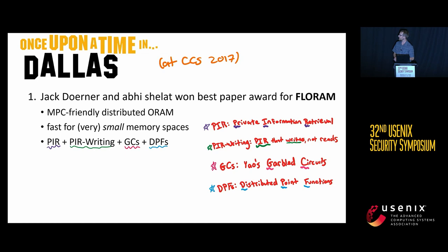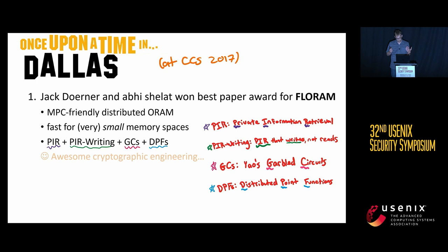Going back to CCS 2017: this was the FlowRAM construction. It was really nice — it won a best paper award, very high quality work by Jack Dorner and Abby Shallott. It uses all of my favorite cryptographic primitives: private information retrieval, PIR writing, garbled circuits, and distributed point functions. It is a very beautiful bit of cryptographic engineering. On the other hand, it doesn't break any barriers, and I really like breaking stuff, so I thought let's try to go with this and break some barriers.